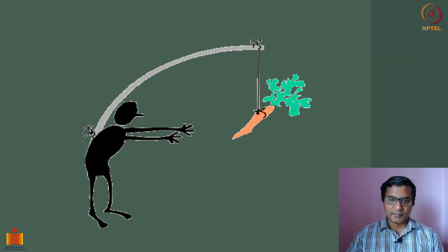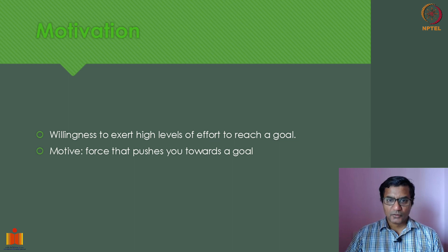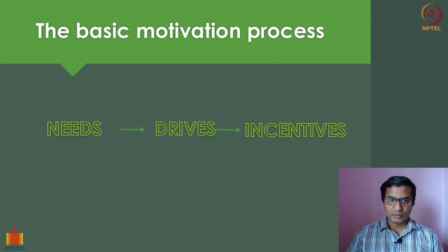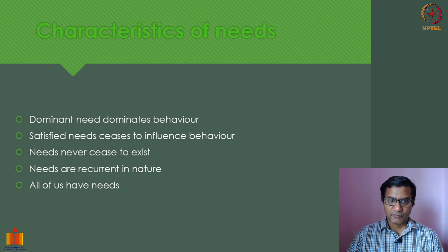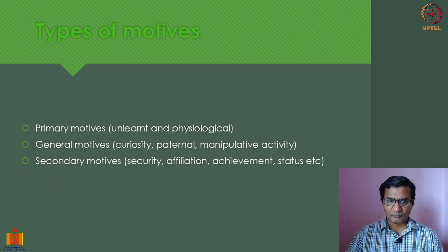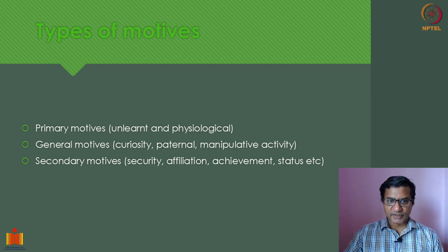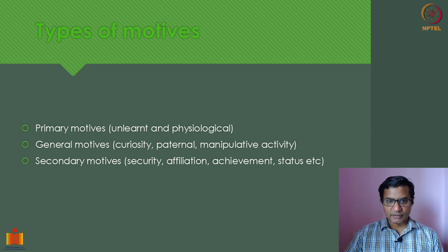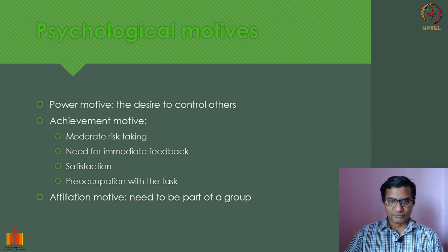A quick summary of what happened in the previous lectures. We defined what is motivation and also looked at the motivational process in which we explained what are needs. We also explained the different types of motives. Motives primarily are divided into primary motives, general motives, and secondary motives. Primary motives are unlearned or biological motives, while general and secondary motives are learned motives.